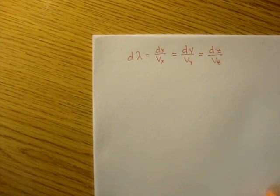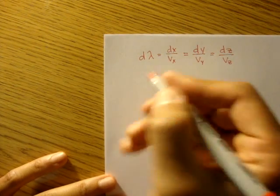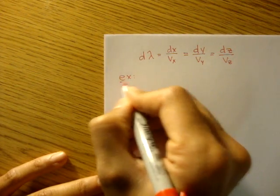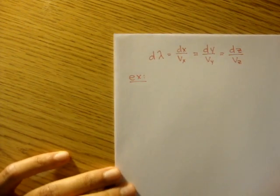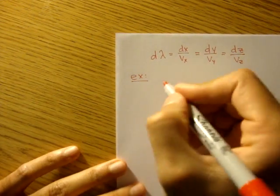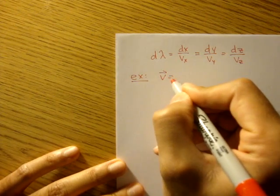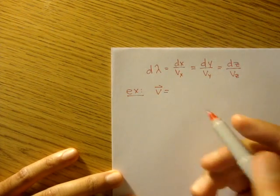Okay, so let's do one example. We'll call it example. And the problem is they give us a velocity function or a velocity field.